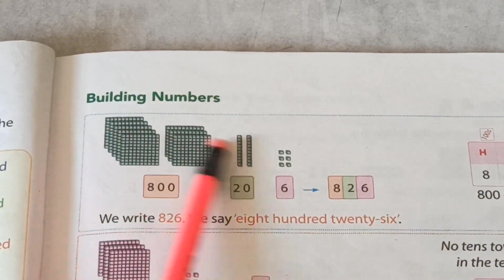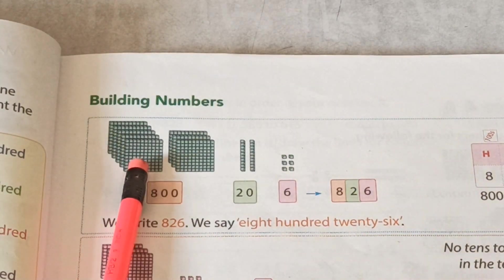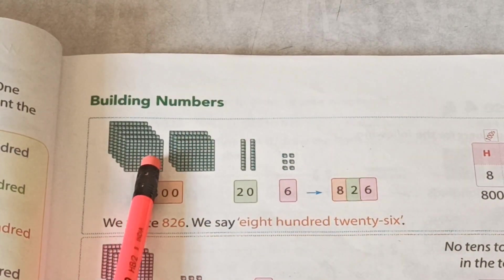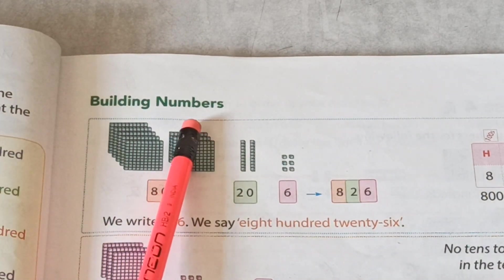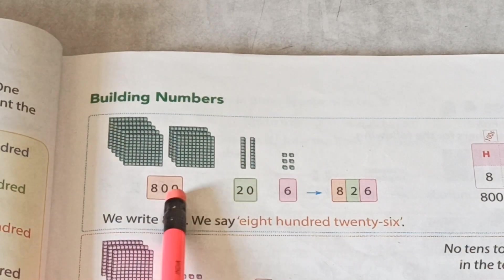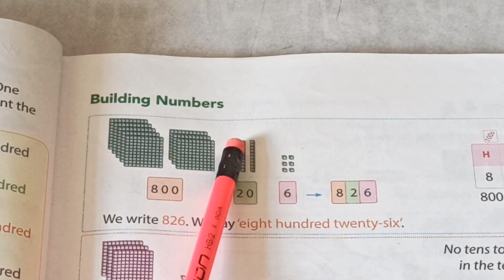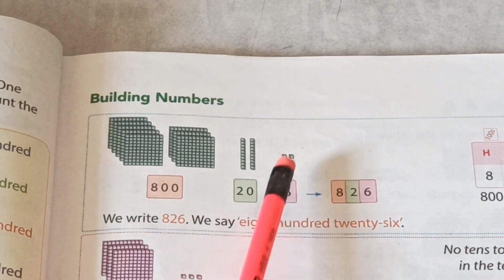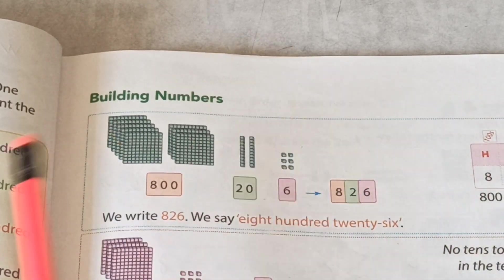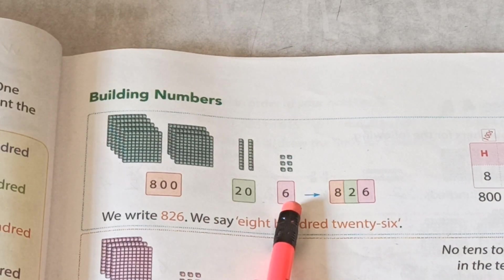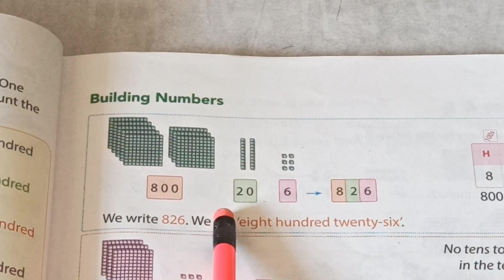See, how many buildings are here? First count. One building means how many? 100. Okay. 1, 2, 3, 4, 5, 6, 7, and 8 means here 800. And how many tens? 1, 2. Two tens means 20. And how many ones? 1, 2, 3, 4, 5, 6. Six ones means 6.